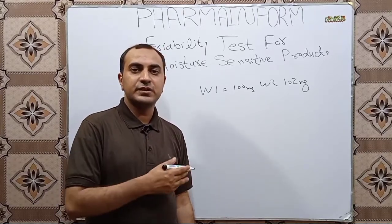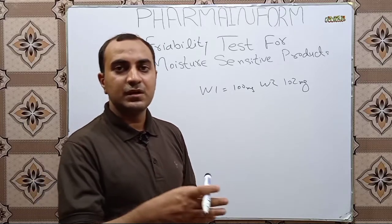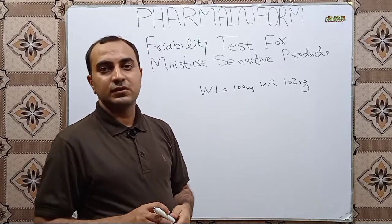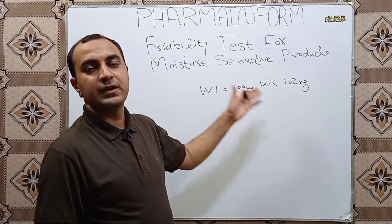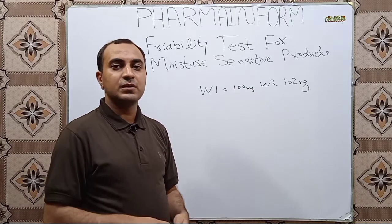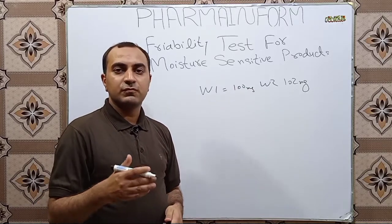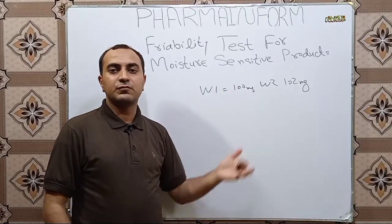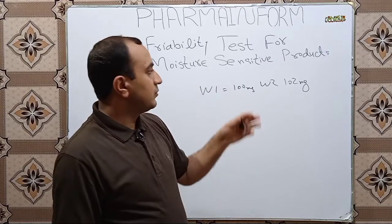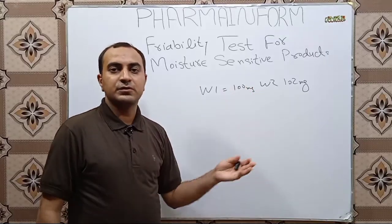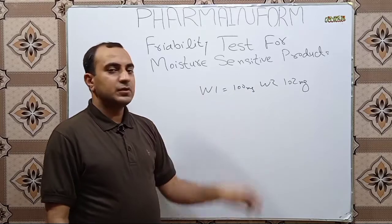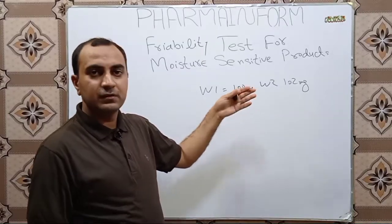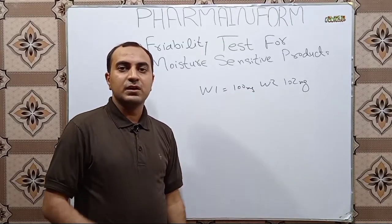The solution is to always perform the friability test for moisture sensitive products in a controlled environment — meaning perform the test where temperature and humidity are controlled according to the requirements of that specific product. For example, at 30 to 40 percent relative humidity and 24 to 25 degrees centigrade. When you perform the test at controlled temperature and humidity, this problem will not occur and values will be in positive range as calculated in normal scenarios.